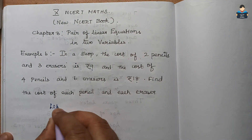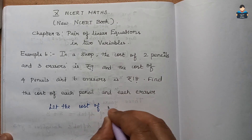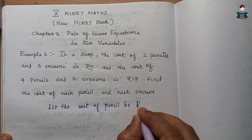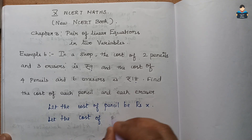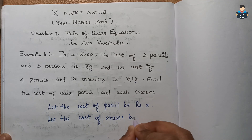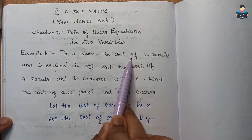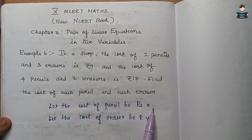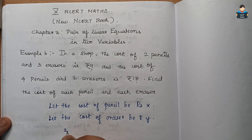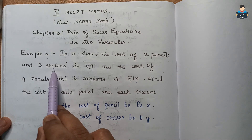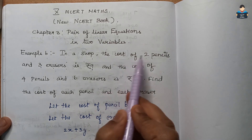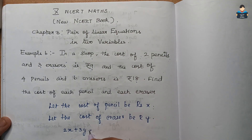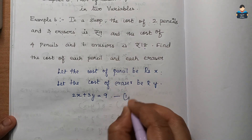Let the cost of one pencil be Rs.x and the cost of one eraser be Rs.y. So 2 pencils cost 2x, and 3 erasers cost 3y. Therefore, 2x plus 3y equals 9. This is Equation 1.